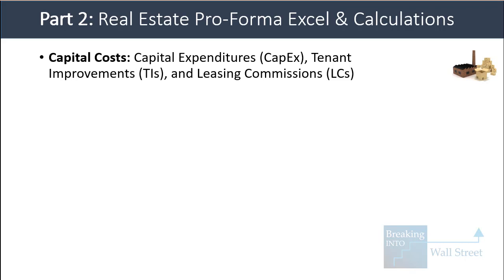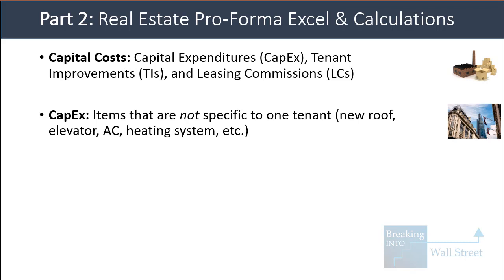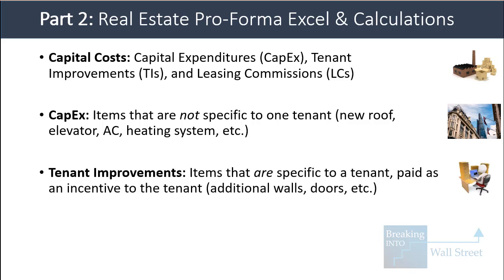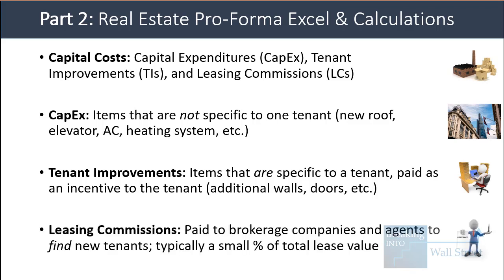The three main capital cost items are capital expenditures (CapEx), tenant improvements (TIs), and leasing commissions (LCs). CapEx covers property-wide items like a new roof, elevator, air conditioning, or heating system. Tenant improvements are items specific to an individual tenant — paid as an incentive — such as modifying the space, adding walls, or setting up the office differently. Leasing commissions are paid to brokerage companies and real estate agents to find new tenants, and are typically a small percentage of the total lease value.